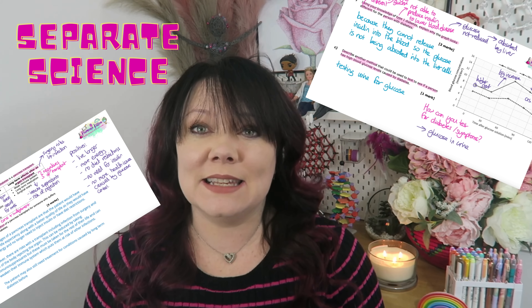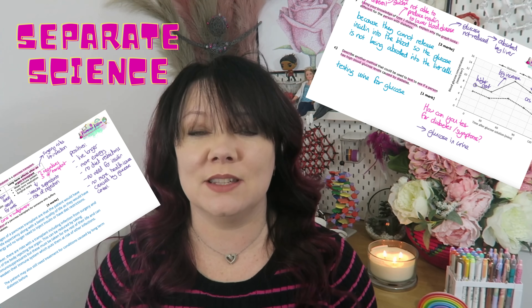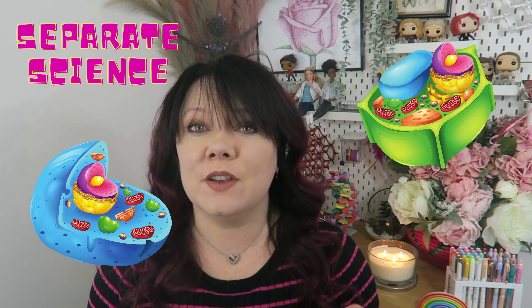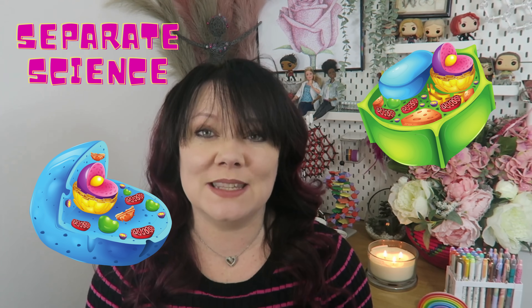This exam typically begins with questions on cells, so understand the characteristics of bacterial, animal, and plant cells thoroughly, focusing on cell differentiation and specialised cells. For microscopes, cover the intricacies of using a microscope, calculations and magnification, and the practical you've done on this.